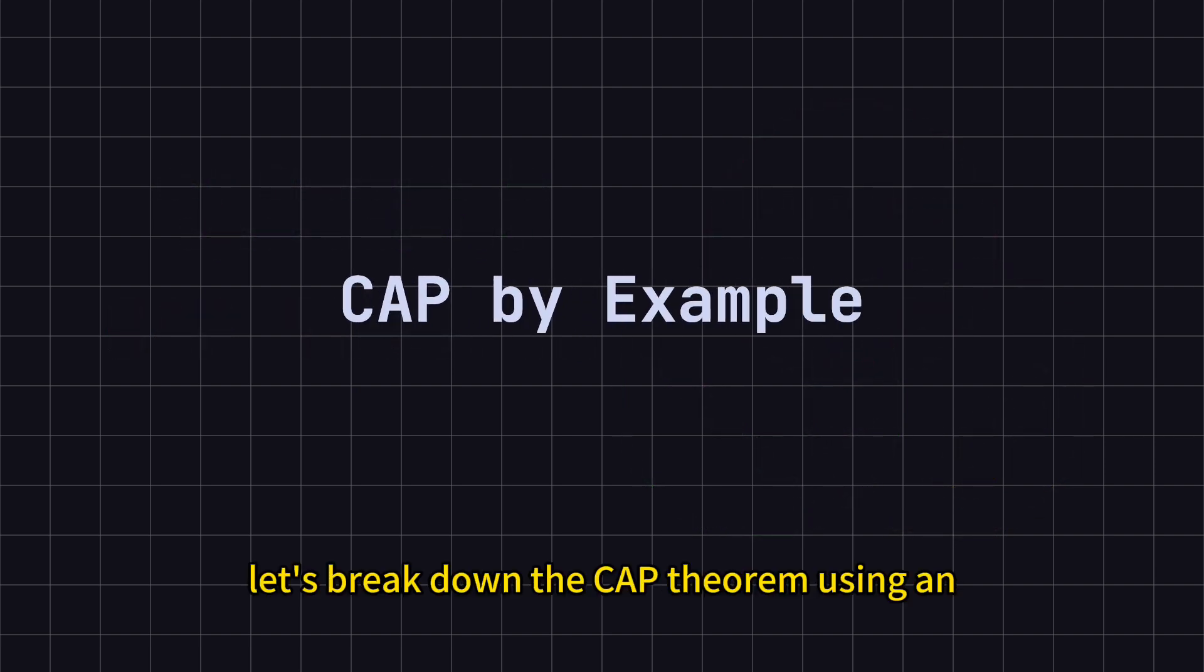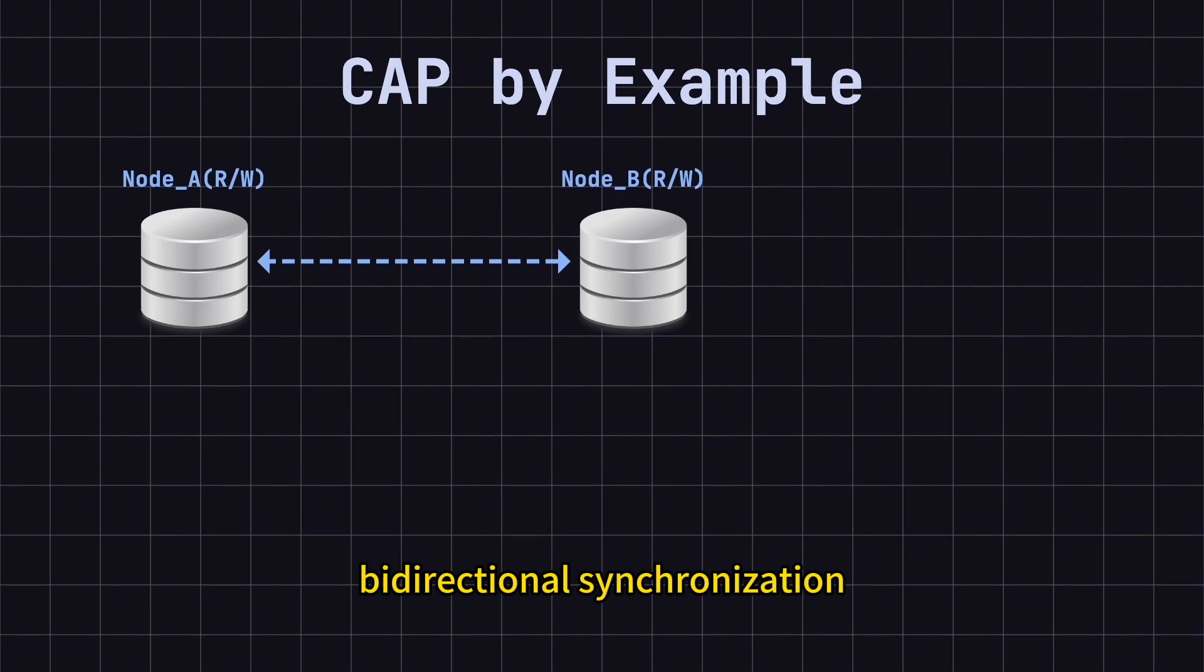Let's break down the CAP theorem using an example of real-time bidirectional synchronization between two database nodes. Imagine we have two peer database nodes, A and B, that sync in real-time over a high-speed network. Each node can independently provide read and write services to clients. This high-availability setup is known as an active-active model. To keep things simple, I'm only using two nodes in this example. But in reality, the system could involve three or more nodes, making it more complex.